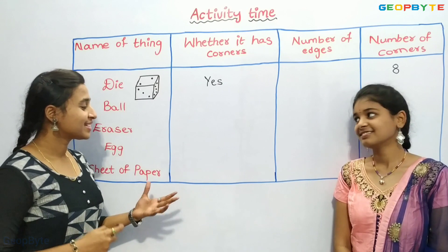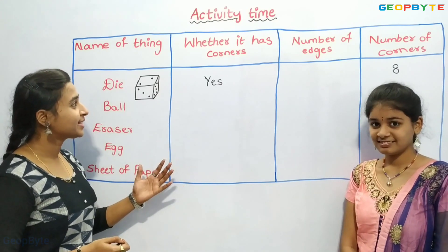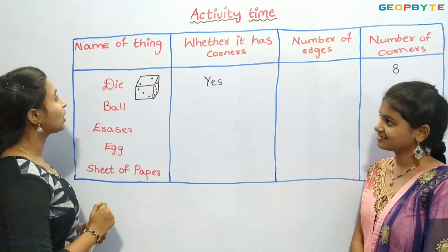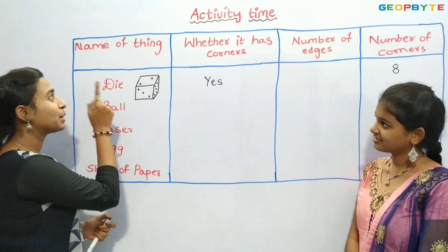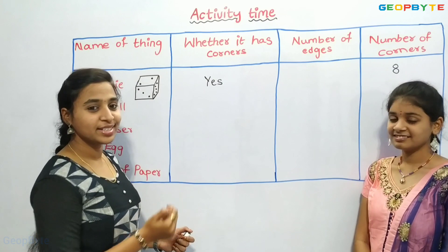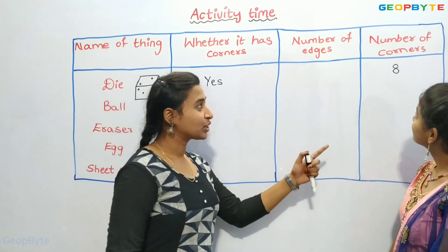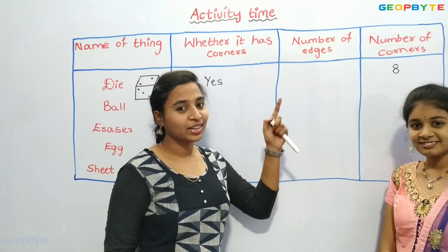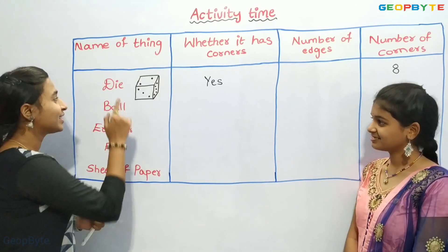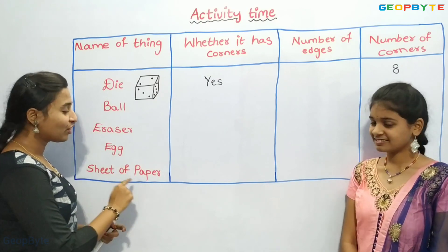Hey kids, see here. We have a table with four columns. In the first column, we have the name of the thing. In the second column, whether it has corners. In the third column, the number of edges. In the fourth column, the number of corners. The things we have are: die, ball, eraser, egg, and sheet of paper.